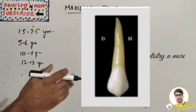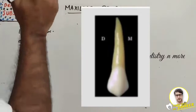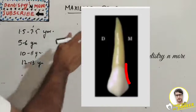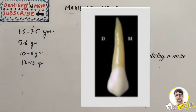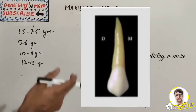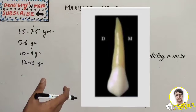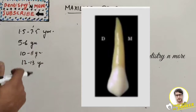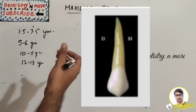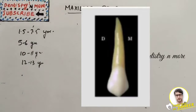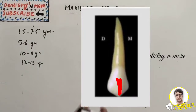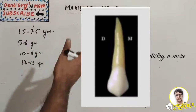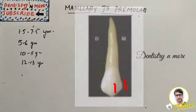The contour of the mesial outline is concave from the contact area to the cervical line — that is a peculiar feature of the maxillary first premolar. The mesial slope of the buccal cusp is longer than the distal slope, which is the opposite of the canine. The disto-occlusal angle is slightly less prominent. There is presence of a buccal ridge and mesio-buccal and disto-buccal developmental depressions on each side of the buccal ridge.